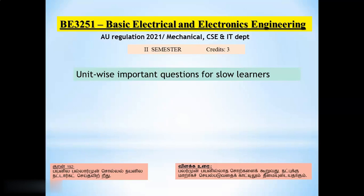Good evening to all. BE3251 Basic Electrical and Electronics Engineering is a subject given for second semester Mechanical Engineering, Computer Science Engineering and IT department students. As per Anna University Regulation 2021, it is a 3 credit paper.